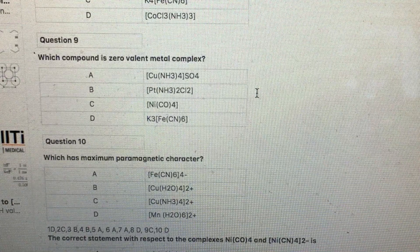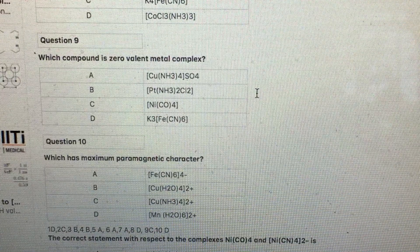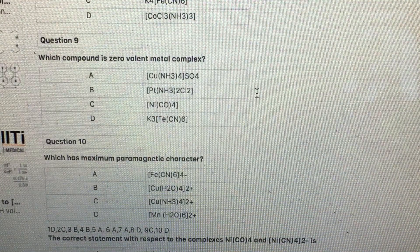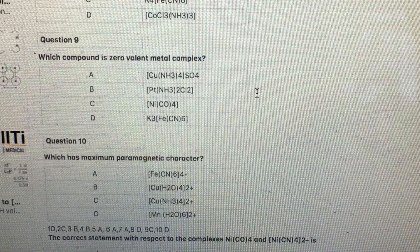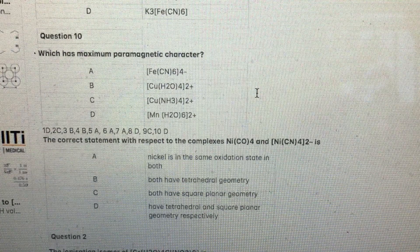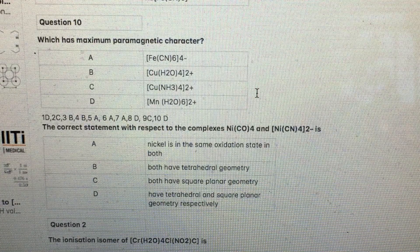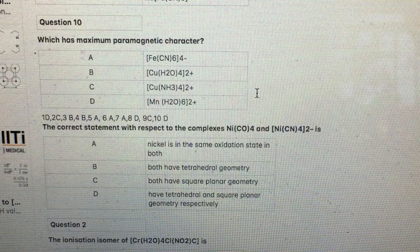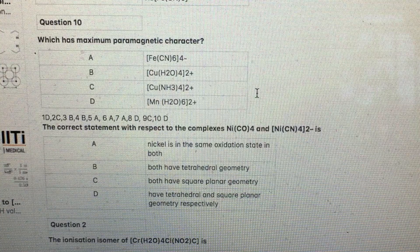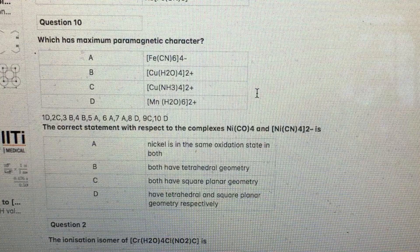The compound with zero valent metal: zero valent means valency of metals is zero only in metal carbonyls. Answer is nickel tetracarbonyl. Which has maximum paramagnetic character? That which has maximum number of unpaired electrons, which is possible only if weak field ligands are there. You can try with B and D. Answer is clearly D, because D has five unpaired electrons.